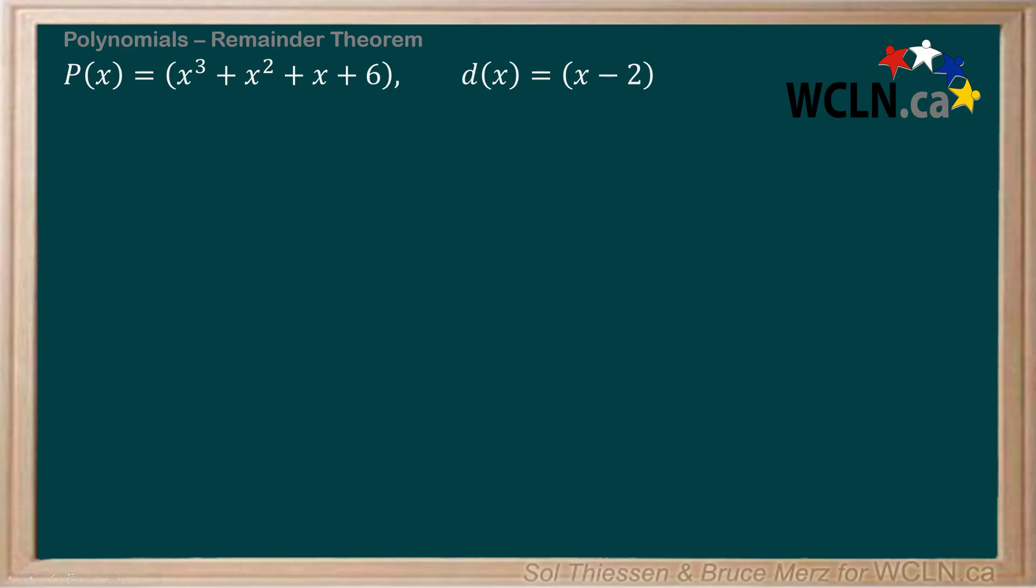Let's see this in action with an example polynomial, x³ + x² + x + 6 and the same divisor x minus 2. We will first determine the remainder using polynomial division, and then by using the Remainder Theorem. The two methods should give us the same result.